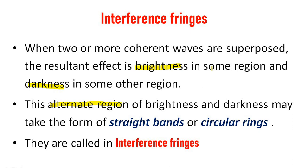There are two types of interference: constructive interference, which produces bright bands, and destructive interference, which produces dark bands. So if two or more coherent waves are superposed, the resultant effect will be brightness in some regions and darkness in others — an alternating pattern. This can appear as straight bands — dark band, bright band, dark band, bright band — or as circular rings with alternating dark and bright rings. These bands or rings are known as interference fringes.